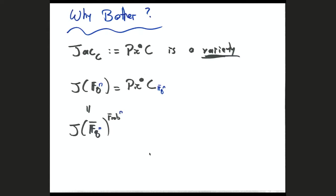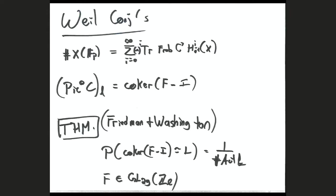The reason the Jacobian is so useful is the Weil conjectures. Because J is a variety, the F_q^N points of J are the same as the F_q^N-bar points fixed by Frobenius. Over a finite field the Galois group is topologically cyclic, so you can model the F_q^N points of the Jacobian via a single matrix — a priori living in GL_{2g}(Z_l). The Weil conjectures say that the F_q points of a variety X are this alternating sum of traces of Frobenius acting on H^i_ét with compact support.